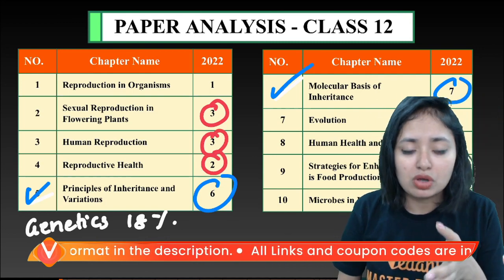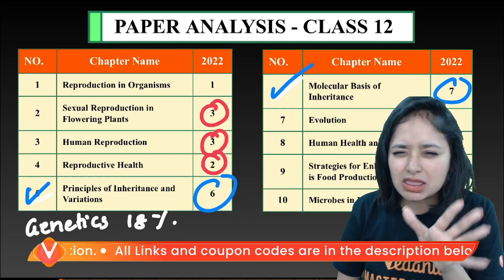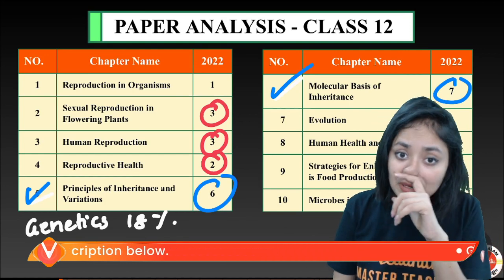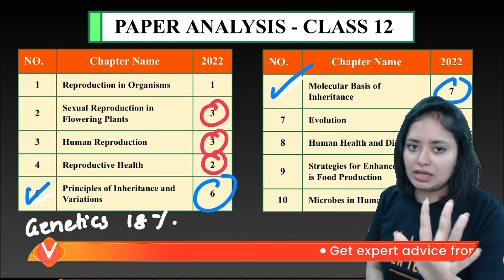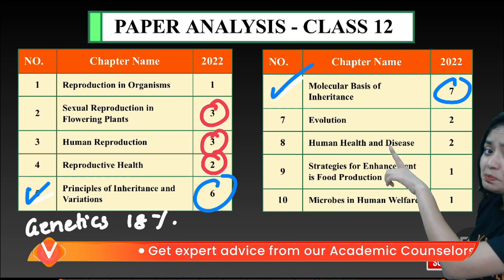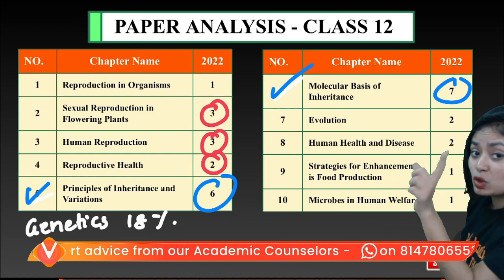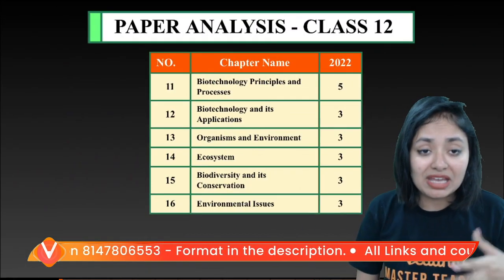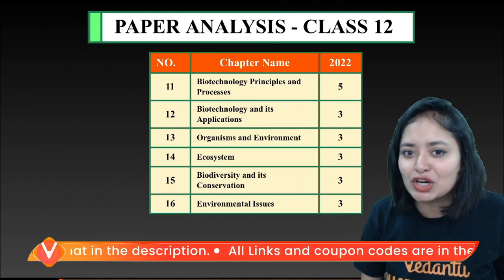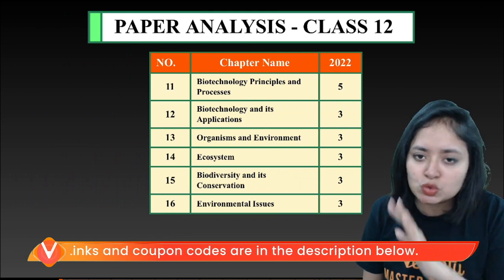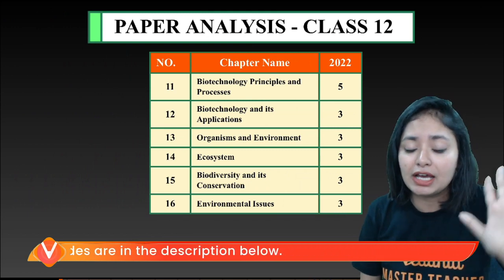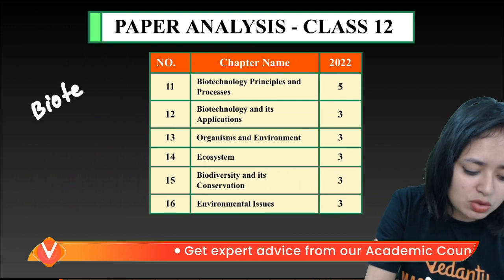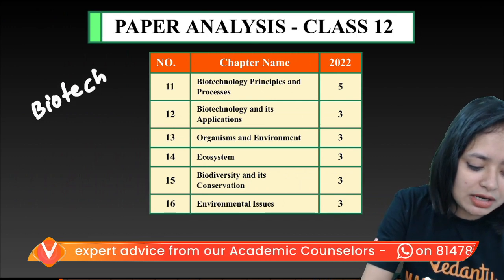If you are preparing for human reproductive health and human health, that's a great preparation because the questions are twisted. If you are preparing word by word, line by line, preparation is clear. If you want to go to human welfare, you need to go to human health — human health 2 questions, microbes 1 question, strategies of enhancement of food production. Biotech is very important — genetics unit and biotech unit, 100% clear.